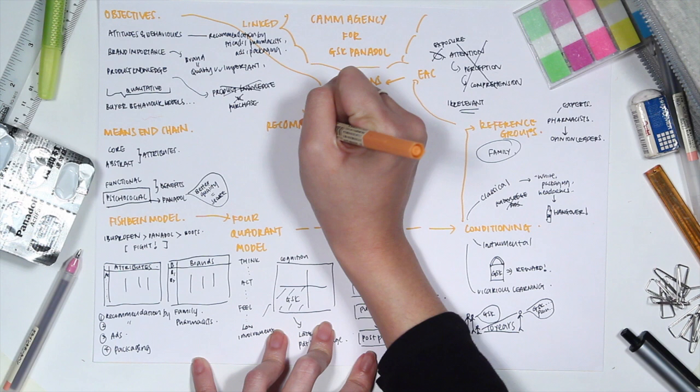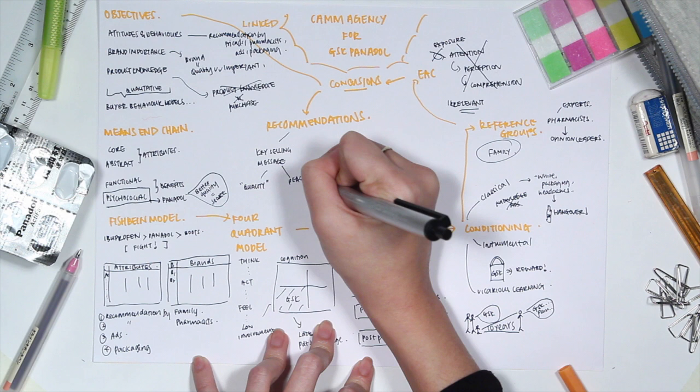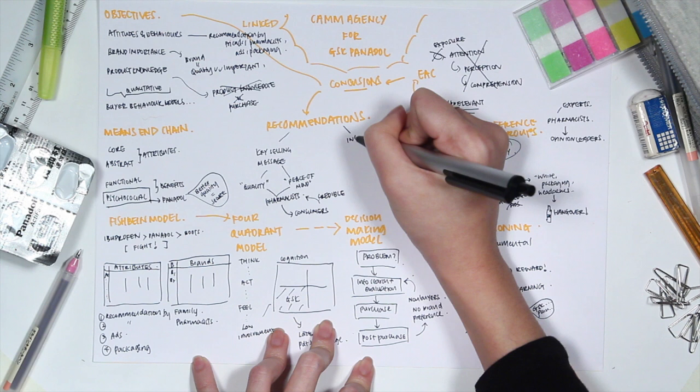With all this information, we would like to recommend for GSK to first, when dealing with pharmacists, the sales representatives can adjust their key selling message to emphasise the product quality, which will provide peace of mind, which is important because pharmacists are opinion leaders as discussed previously. These translate to consumers receiving the information to be more credible.